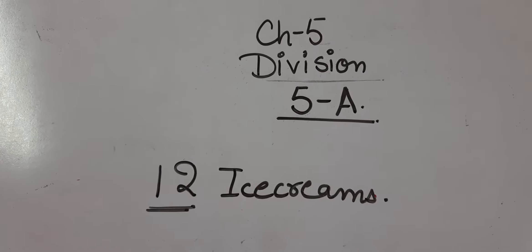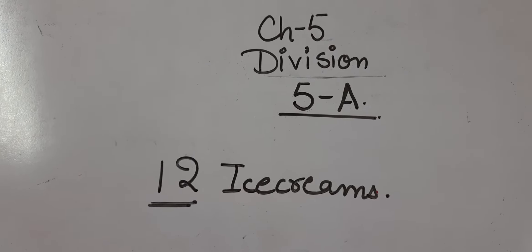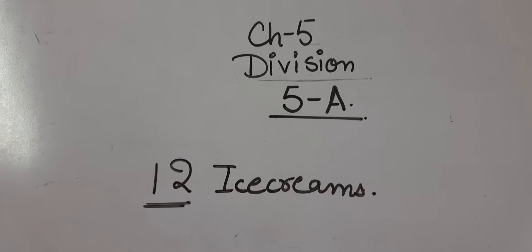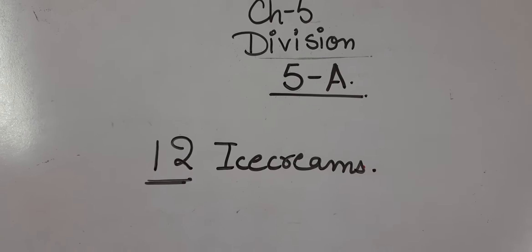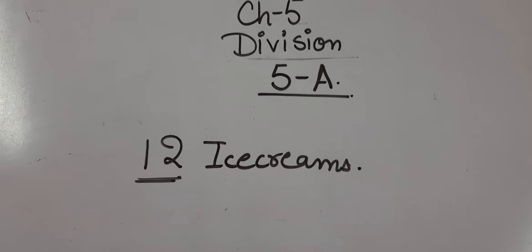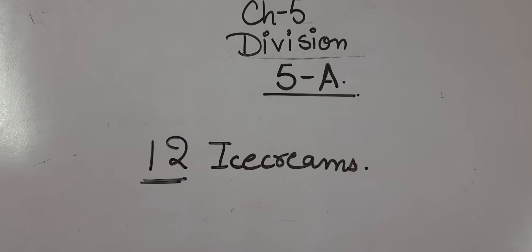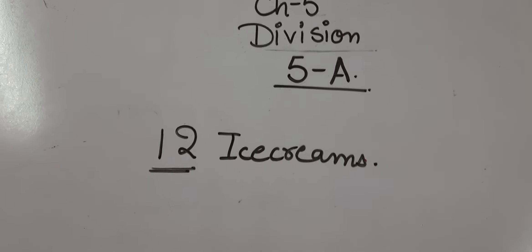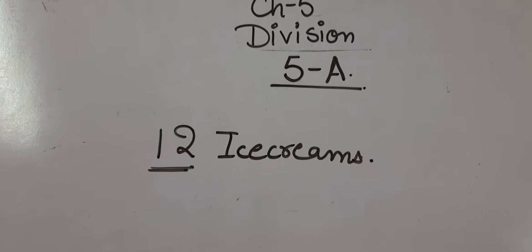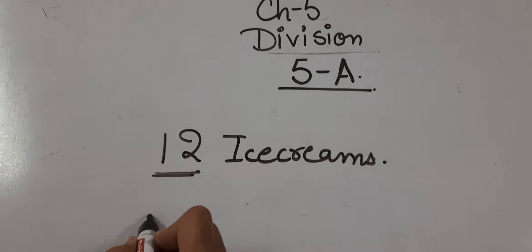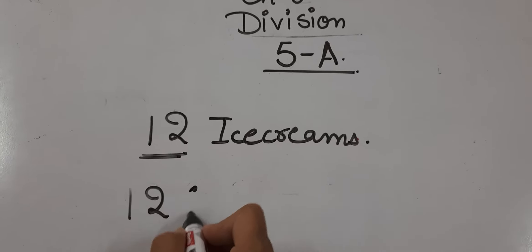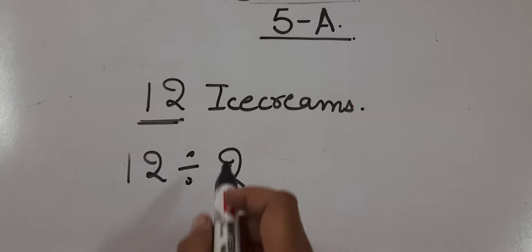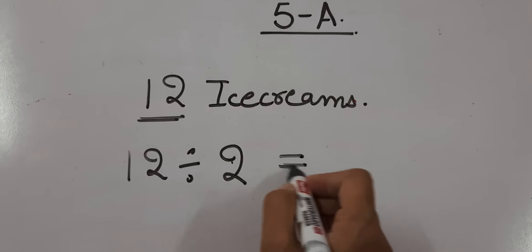Good morning class. Today we are going to start Chapter 5: Division. I am going to take examples from Exercise 5A so that you will understand. First of all, what is division? Suppose I have 12 ice creams and I want to divide these 12 ice creams in such a way that each of my friends will get at least 2 ice creams. So 12 divided by 2 will give each person 2.